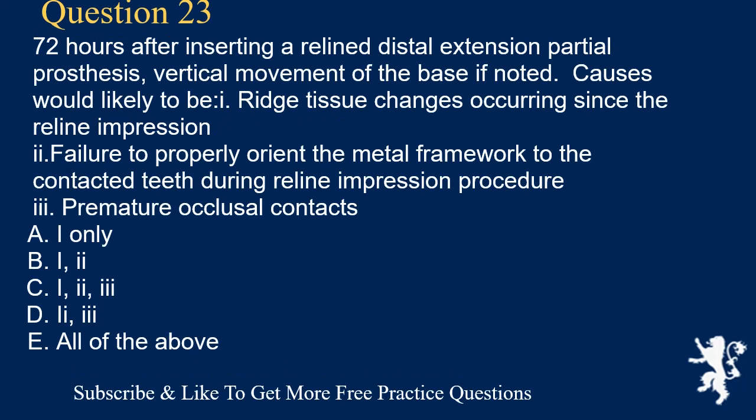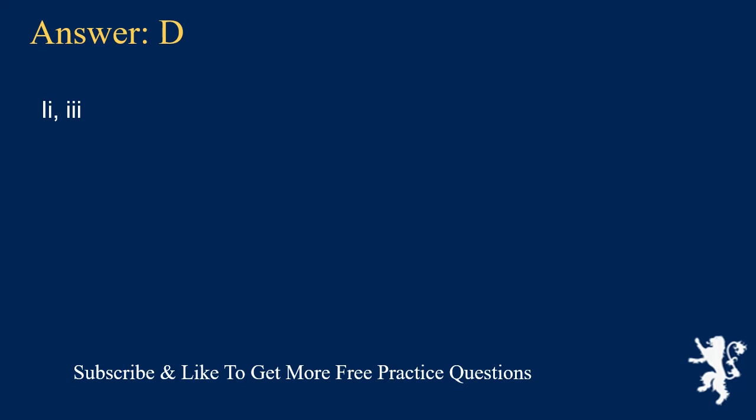Question 23. Seventy-two hours after inserting a relined distal extension partial prosthesis, vertical movement of the base is noted. Causes would likely be: 1. Ridge tissue changes occurring since the reline impression, 2. Failure to properly orient the metal framework to the contacted teeth during the reline impression procedure, 3. Premature occlusal contacts. A. 1 only; B. 1,2; C. 1,2,3; D. 2,3; E. All of the above. Answer: D. 2, 3.